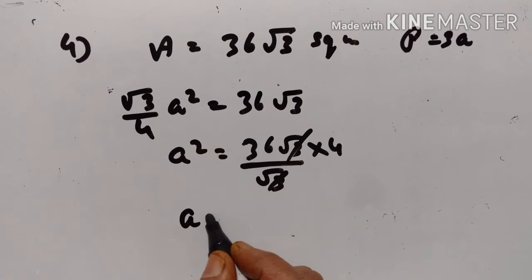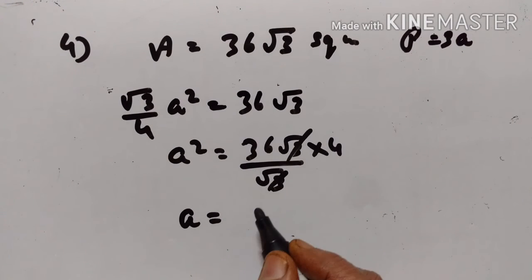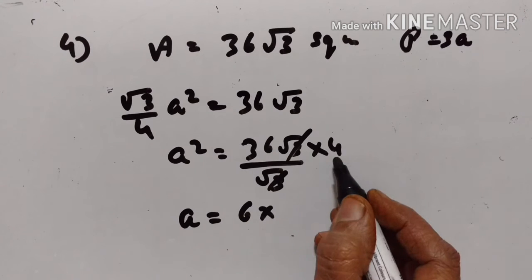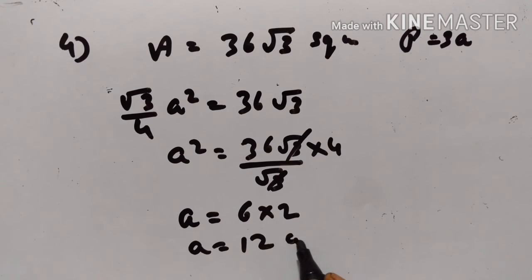Taking the square root on both sides, we get A equals... square root of 36 equals 6, square root of 4 equals 2. So A equals 12 centimeters.